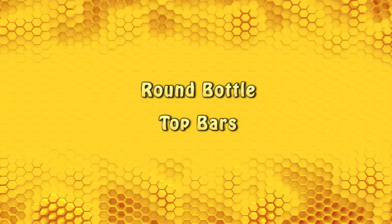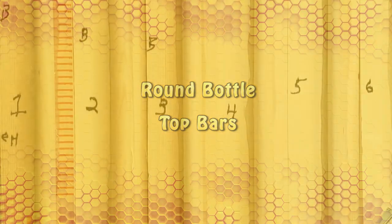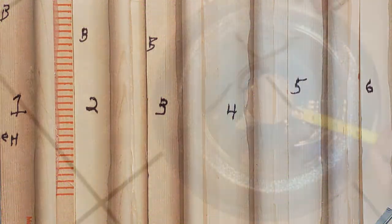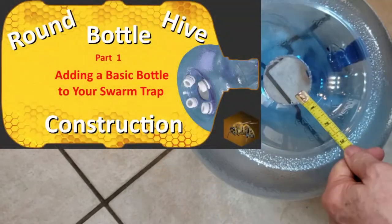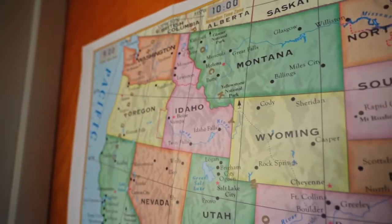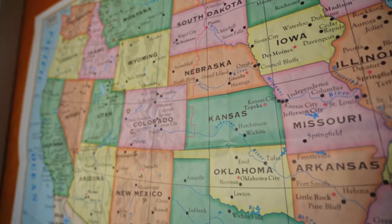I'm going to show you how to build top bars for your round bottle beehive. These removable top bars will go into the 5 gallon bottle that you converted in a previous video and will allow you to meet the requirements of many jurisdictions that call for movable comb.